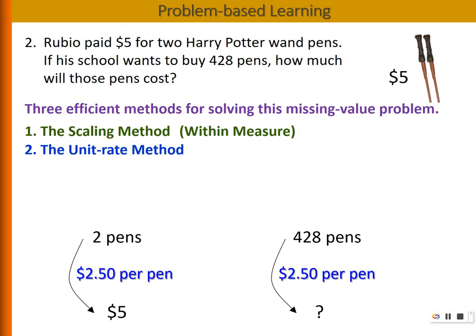So this method is called the unit rate method. This is called the across measure method.